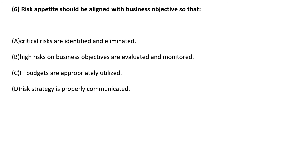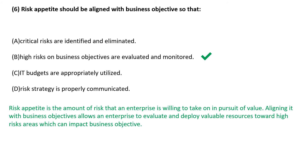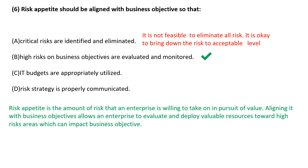Risk appetite should be aligned with business objectives so that: risk appetite is the amount of risk that an enterprise is willing to take. Aligning it with business objectives allows an enterprise to evaluate and deploy valuable resources toward high-risk areas that can have an impact on business objectives. It is not feasible to eliminate all risk — it is acceptable to bring risk down to an acceptable level. Options C and D are not the primary objectives.